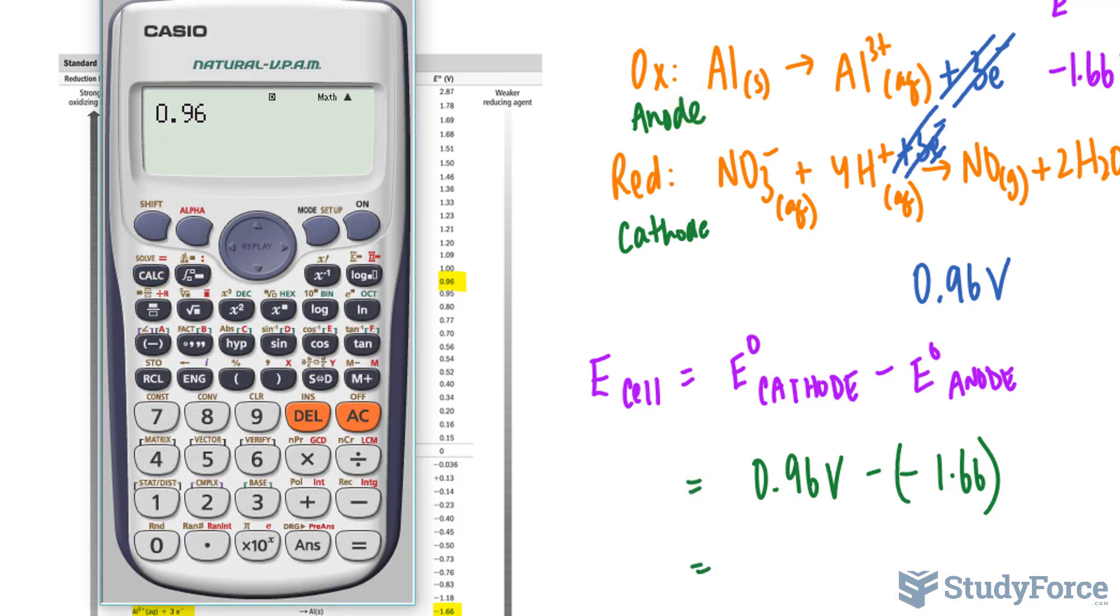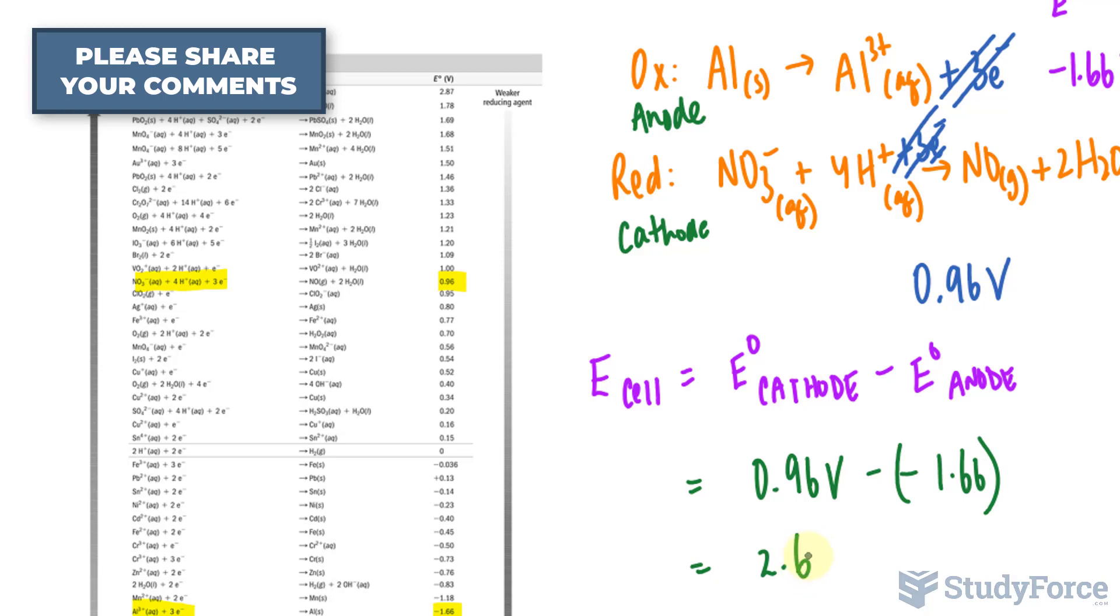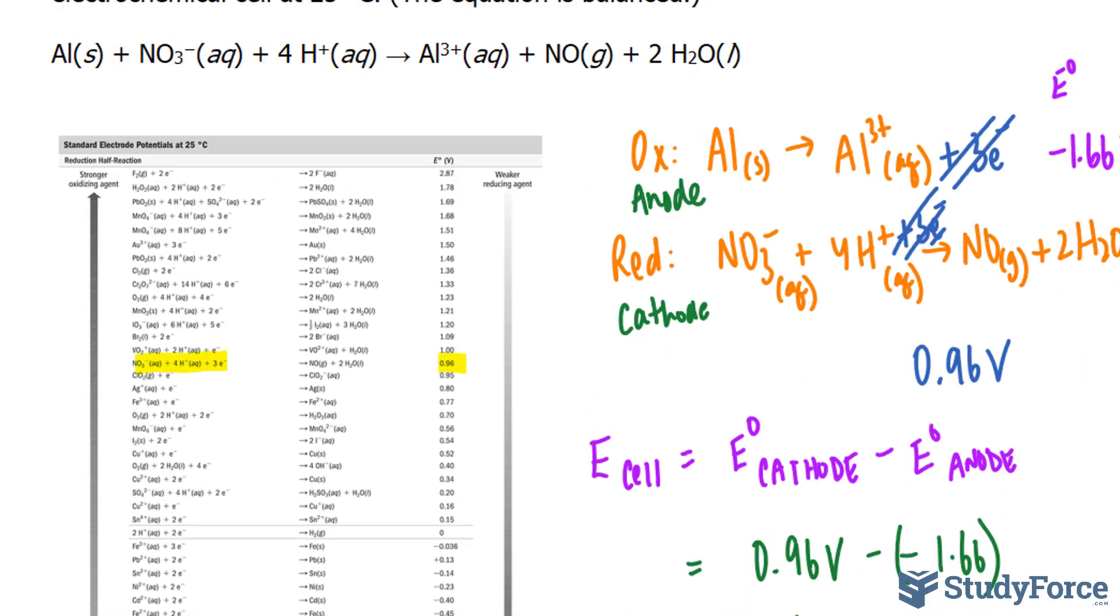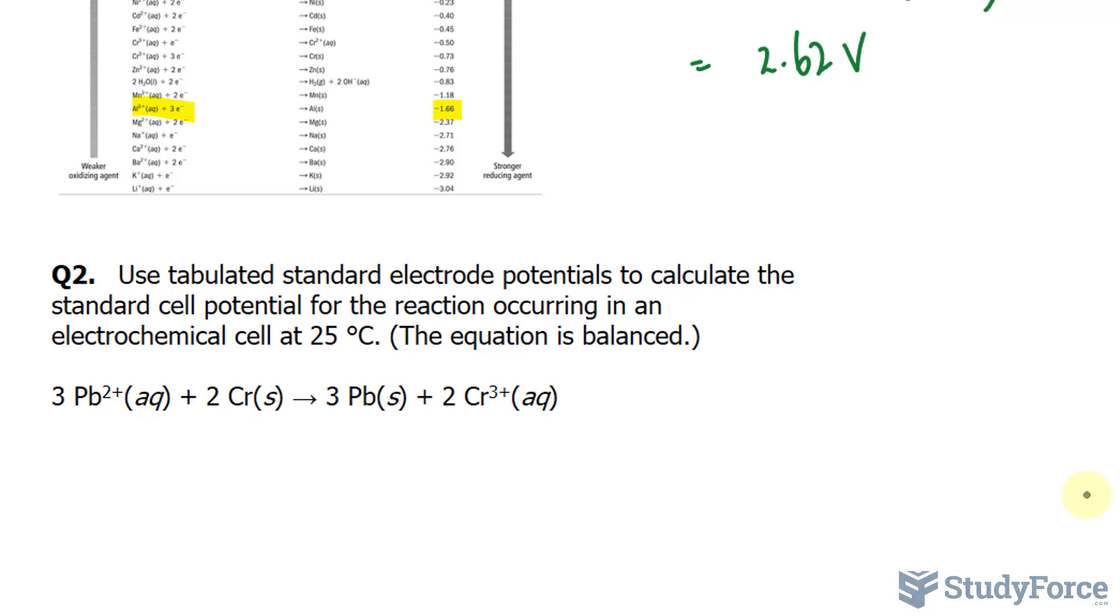Using our calculator, 0.96 minus negative 1.66 gives us, and we want this to two significant figures after the decimal place, 2.62 volts. That right there represents the answer to question number one. If you'd like to see the answer to question number two, make sure that you watch question two of this series where we cover its solution.